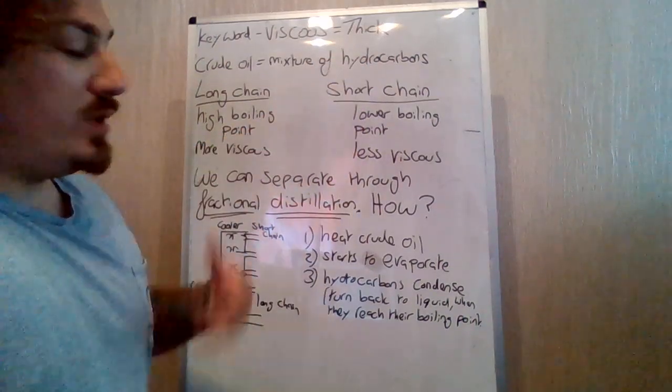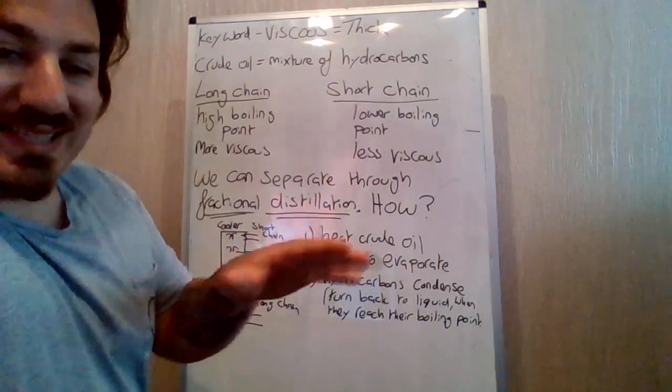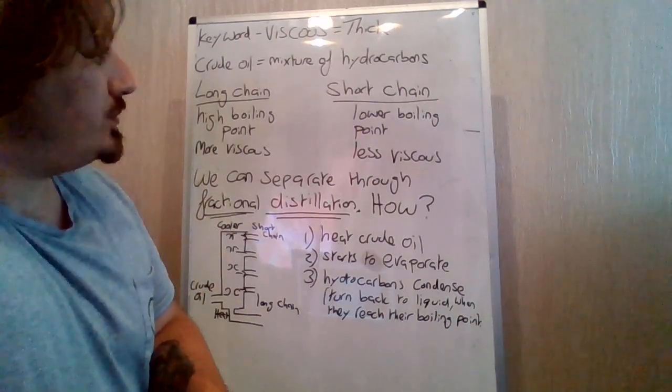So more energy for larger bonds. So you need that higher temperature to evaporate and condense them. And then short chain hydrocarbons, well, they've got lower boiling points. So easier to break, less energy you have to put into it.